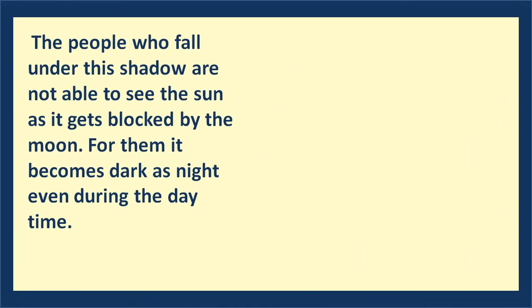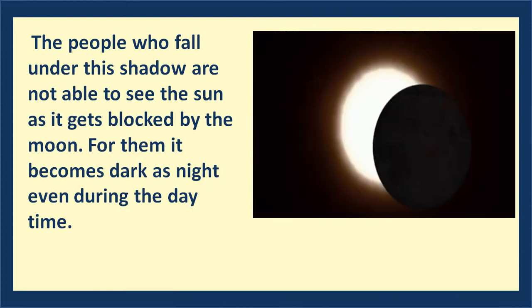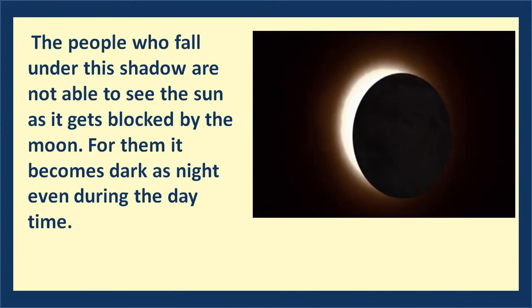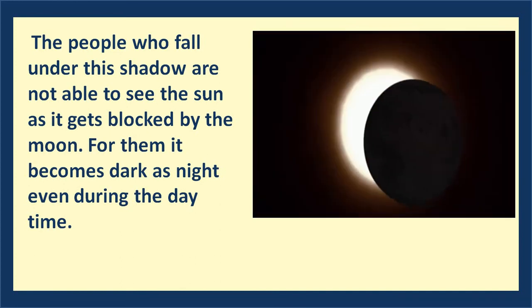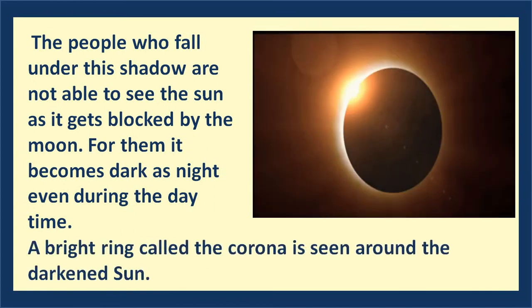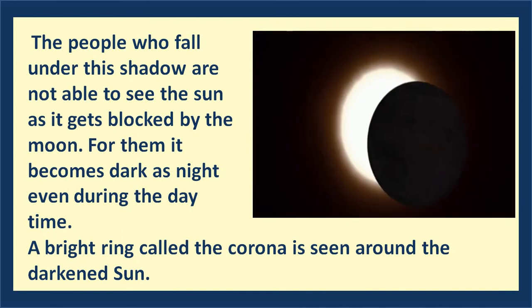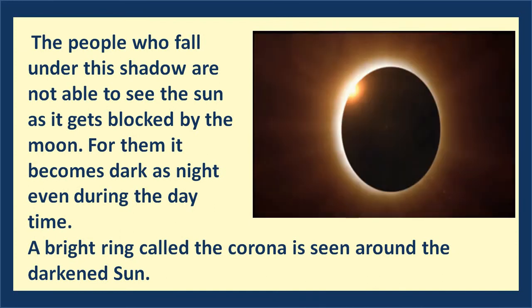During a Solar Eclipse, people who fall under this shadow area are not able to see the sun as it gets blocked by the moon. For them, it becomes dark as night during the daytime. During a total Solar Eclipse, people who fall under this shadow see the sun decrease into a crescent, and when the sun is completely covered — as you can see on the screen — a beautiful ring called the Corona is seen around the darkened sun. The people in the shadow area experience night during the day, and it occurs only for a few seconds.